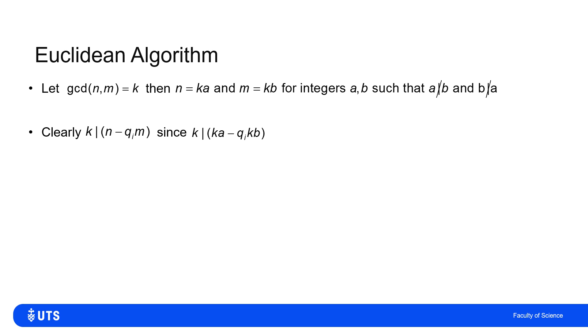So now I can show that K still divides what I updated M to, which was N minus qi lots of M. K is still a divisor of this updated integer.